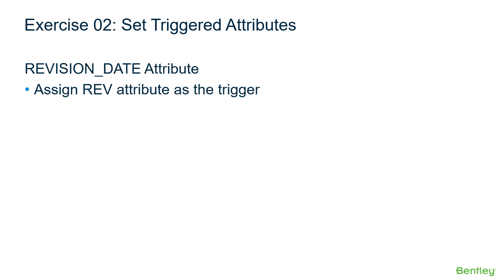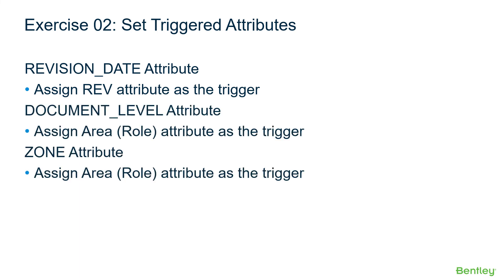The second exercise is on triggered attributes. We'll set up triggered attributes in the MyCompany environment to automatically update default values and value lists when related attribute values change. For the revision date attribute, we want the value to update whenever the rev attribute changes. For document level and zone, we want their value lists to present only data relevant to the area or role selected.